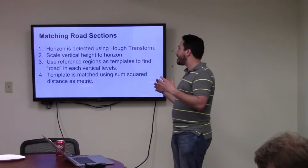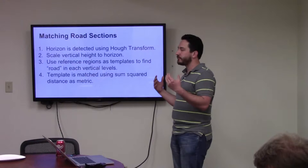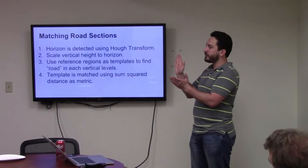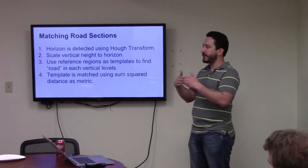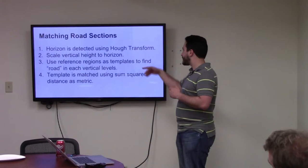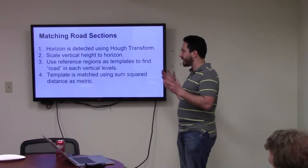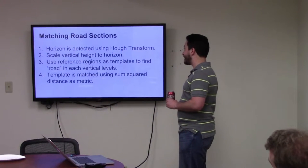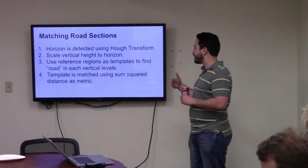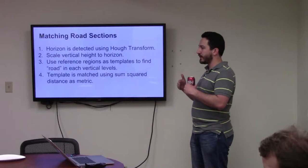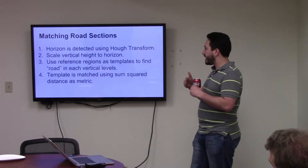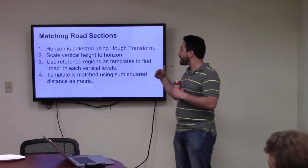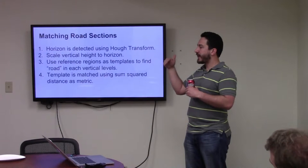And once you have those templates, you take those, they're very thin templates that you've generated, that exist at different heights. You then take each one of those, and you're going to use those to find the road in the next set of images. And the way that you'll do that, first thing you have to do is, because desert roads are really anything, is not perfectly flat, you're going to have the vehicle moving up and down.